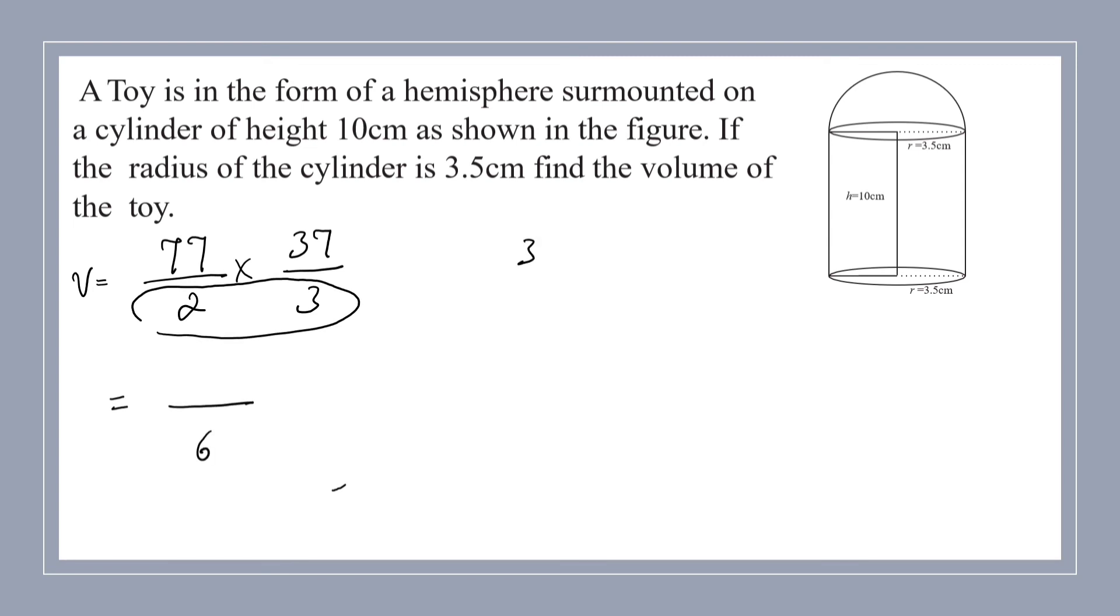37 into 77. What is it now? 7 times 7 is 49. 7 times 3 is 21 plus 4, 25. So it is equal to 9. 9 plus 5, what is it? 14. Carry 1. 2 plus 5, 7. 7 plus 1, 8. 2.